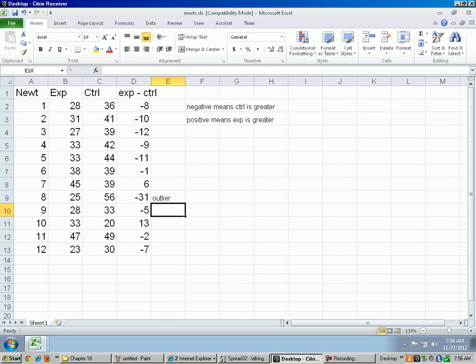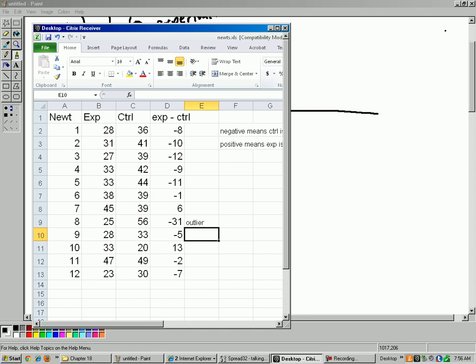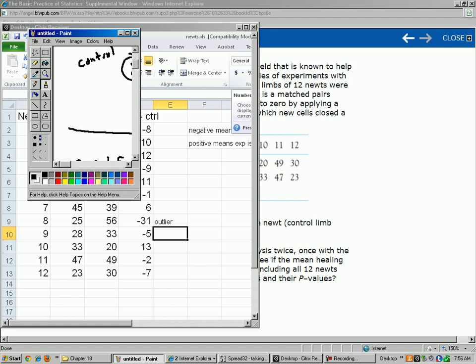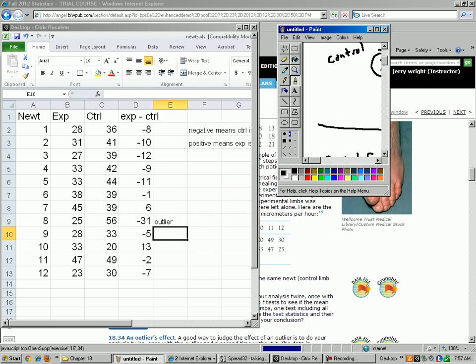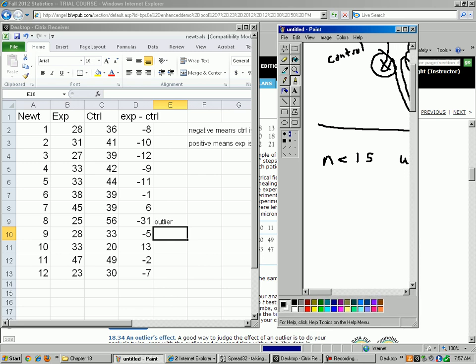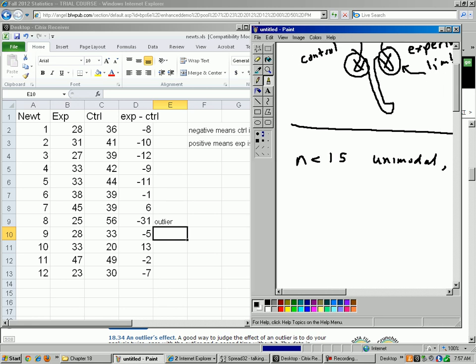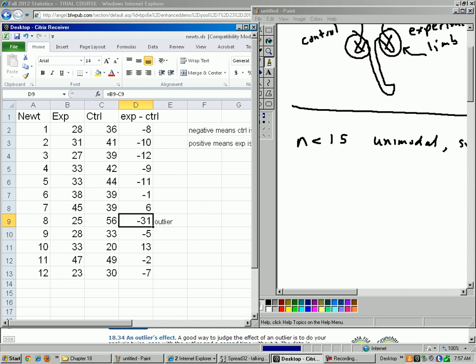So let's go back to our data here. Now how do you make a stem plot with negative numbers? Well, on your stem part, it ranges from negative 31 to positive 13. So I can just do this: negative 3, negative 2, negative 1.